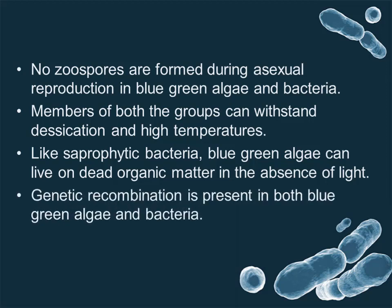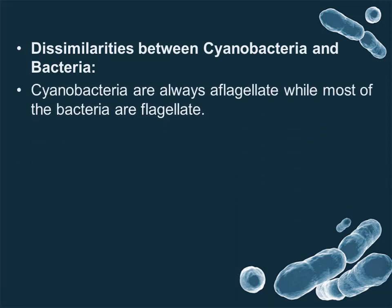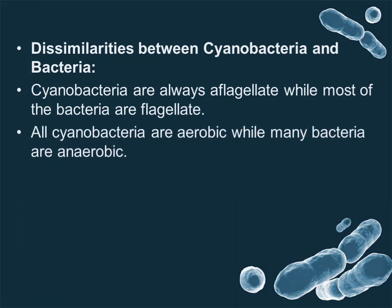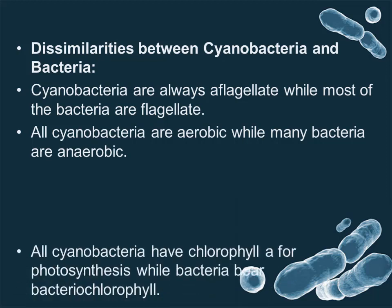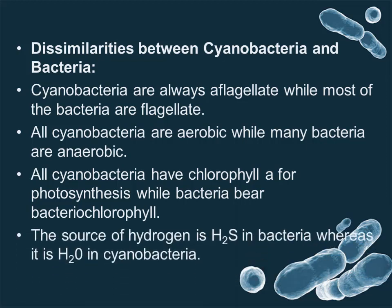Genetic recombination is present in both blue-green algae and bacteria. However, differences exist between cyanobacteria and bacteria: cyanobacteria are always non-flagellate, while most bacteria are flagellate. All cyanobacteria are aerobic, while many bacteria are anaerobic. All cyanobacteria have chlorophyll a for photosynthesis, while bacteria bear bacteriochlorophyll. The source of hydrogen is H₂S in bacteria, whereas it is water in cyanobacteria.